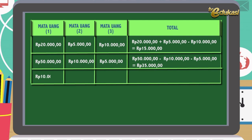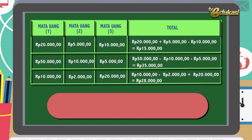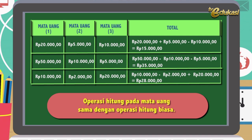Di sini lihat ada Rp10.000, Rp2.000, dan Rp20.000. Ada operasi hitung Rp10.000, dikurangi Rp2.000, ditambah Rp20.000. Hasilnya Rp28.000. Kesimpulannya, operasi hitung pada mata uang sama dengan operasi hitung biasa. Ingat, operasi hitung pada mata uang sama dengan operasi hitung biasa.